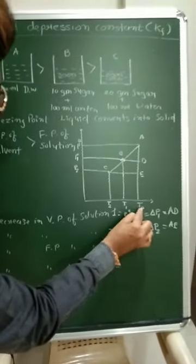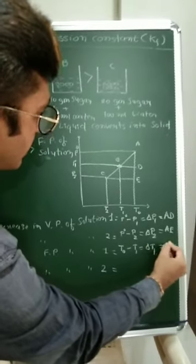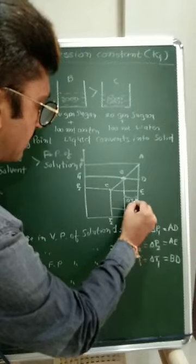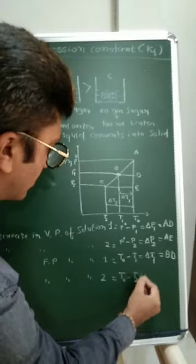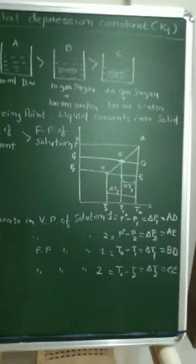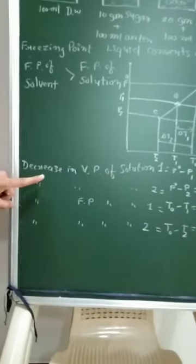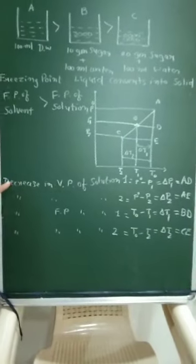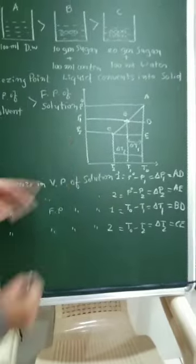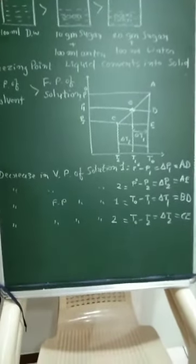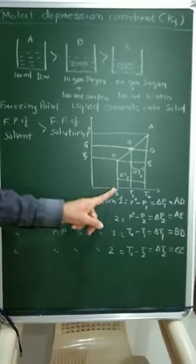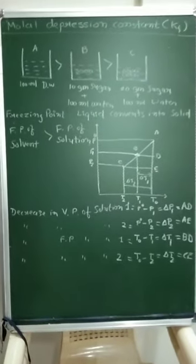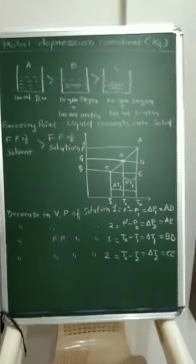So delta P1 equals AD and delta P2 equals AE. For the decrease in freezing point of solution one: T0 minus T1 equals delta T1, which corresponds to BD. And delta T2 equals CE: T0 minus T2 equals delta T2, which is CE. So the basic points are: P0 minus P1 is delta P1, P0 minus P2 is delta P2, T0 minus T1 is BD, and T0 minus T2 is CE. This is the vapor pressure versus temperature plot, now for Tf instead of Tb.